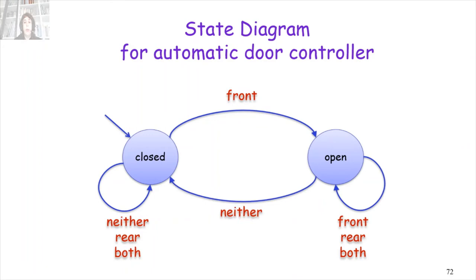So when do we move from open door back to closed door? After sensing that nobody stands on any pad — that neither combination — the door should close. We move from the open state to the closed state. This state diagram explains how the automatic door controller should work.